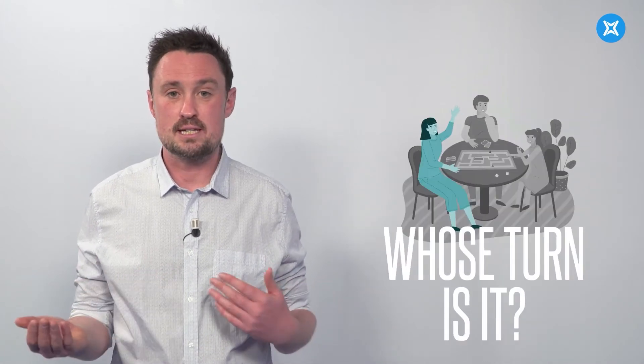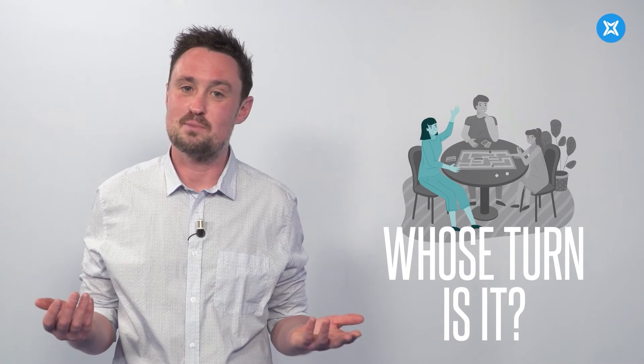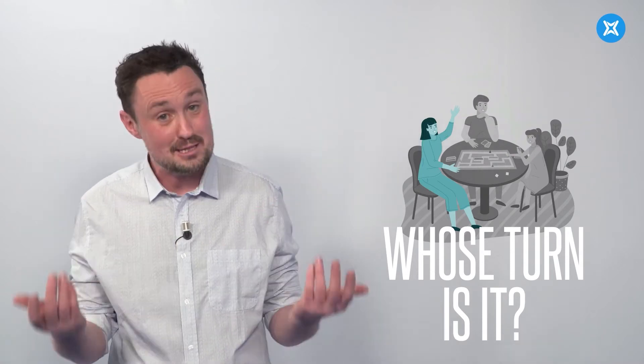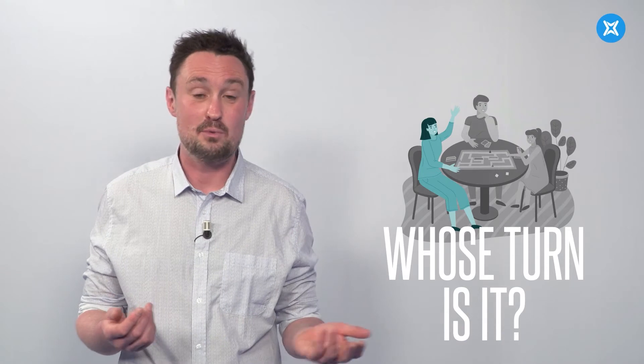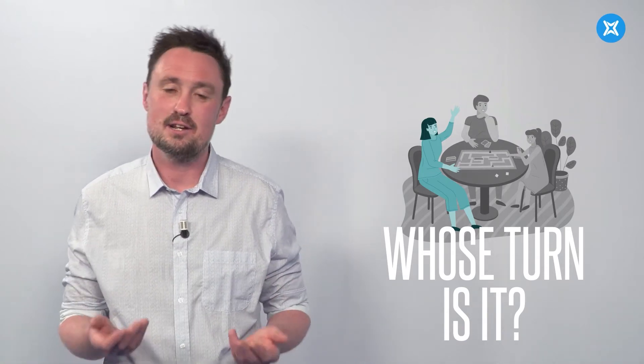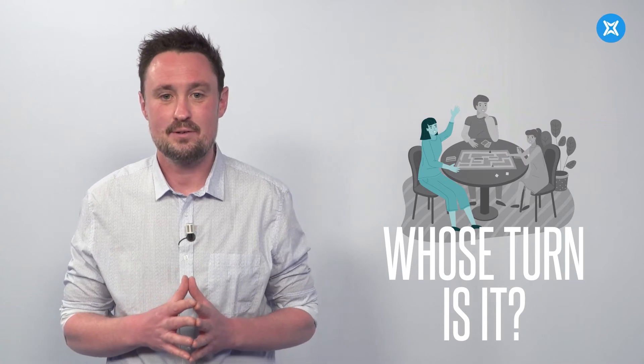The next expression you might use is: whose turn is it? If you're playing chess, you might not use this because it's a two-player game. But if it's a multiplayer game, such as Monopoly, where there are five or six players, you might get lost as to whose turn it is next.